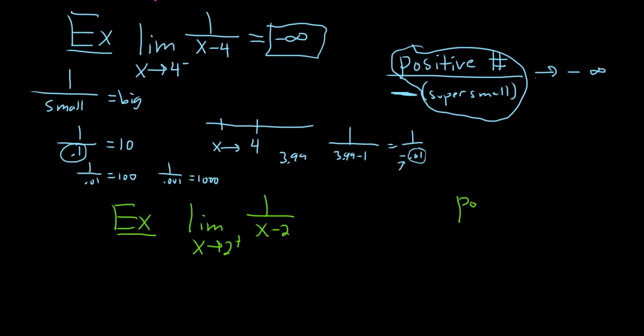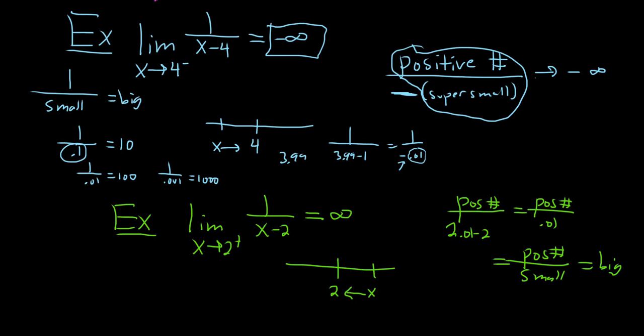So again, up top we have a positive number. This is actually an easier example. And on the bottom we're approaching 2. So here's a picture. Here's 2, and we're approaching from the right. So here's x, and we're coming from this way. So think of a number bigger than 2, like 2.01. That's really close to 2. So 2.01 minus 2 is a positive number over 0.01. So that's a positive number over something small, super small. So that's big, right? So that should give us infinity.